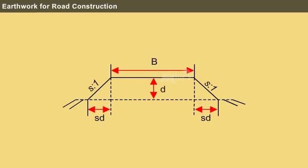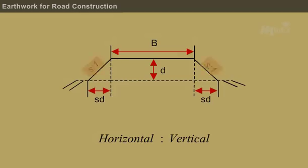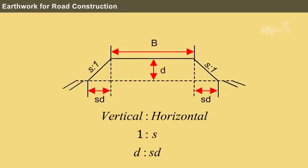The ratio of the side slopes of the road's horizontal is to vertical is represented by s is to 1, where for one vertical, the horizontal will be s and for d vertical, the horizontal will be sd.